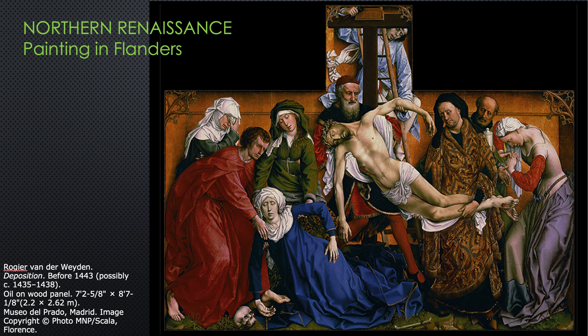Now you've enjoyed a lot of Jan van Eyck and the Mérode Altarpiece — that's all first generation panel painters. Panel painting continues, and a lot of painters are working on pieces in Flanders. We won't look at all of them, but we will look at this one. This artist is Rogier van der Weyden, and he's considered second generation panel painters — he'll continue working in this new medium of oil, but he's not going to load his painting up with symbols. There's more emphasis on the narration and drama of the actual scene than on all these symbols.